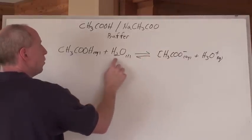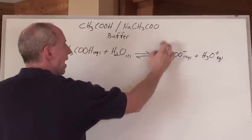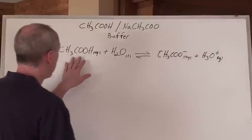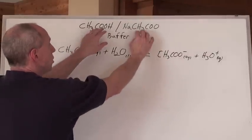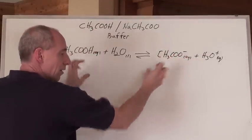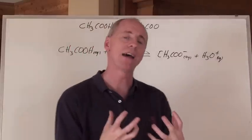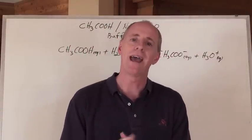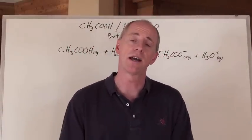Transfer the proton from the weak acid to the water to make hydronium and acetate ion. Now, if you've got enough of these two chemicals in the solution, mixed together, you have a good buffer capacity to be able to absorb excess hydronium or hydroxide ions when they're added.